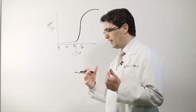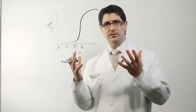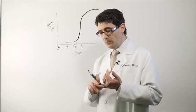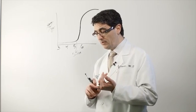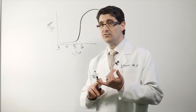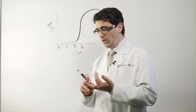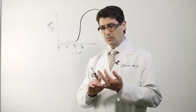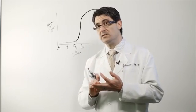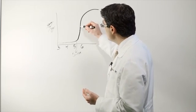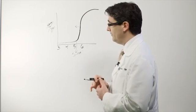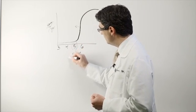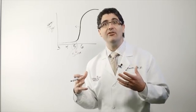Now, that applies to sort of all comers with aortic aneurysm disease. We know that there are some subgroups of patients, for example, people with a significant family history of aneurysm disease, people with connective tissue disorders like Marfan syndrome or Loeys-Dietz syndrome or a bicuspid aortic valve, where we think that this curve is shifted to the left a bit. In those people, we recommend operating sooner, generally around 5 centimeters.